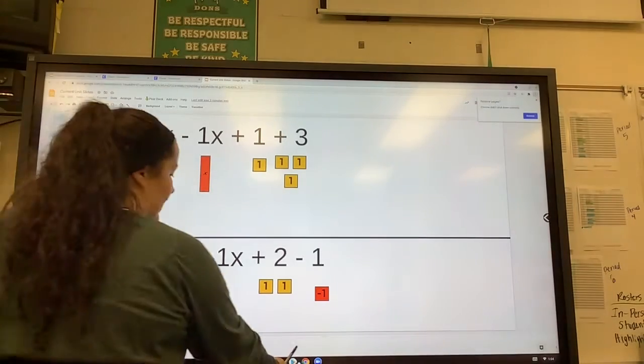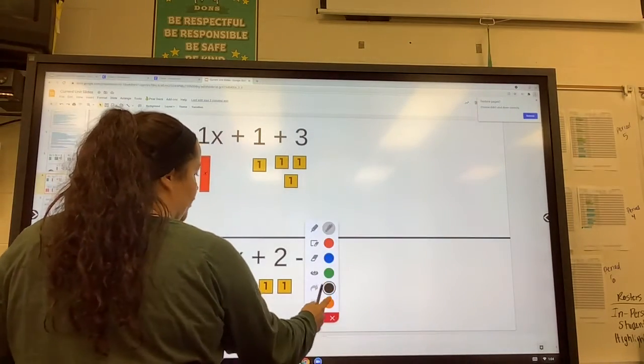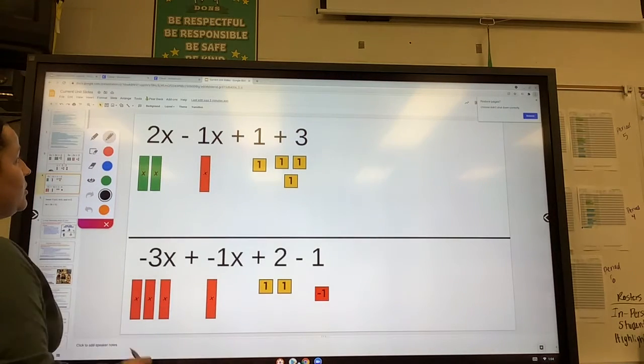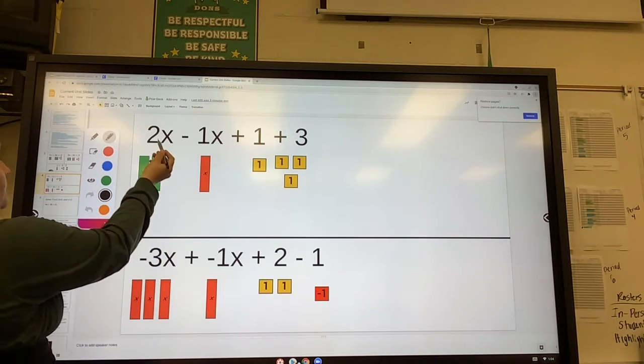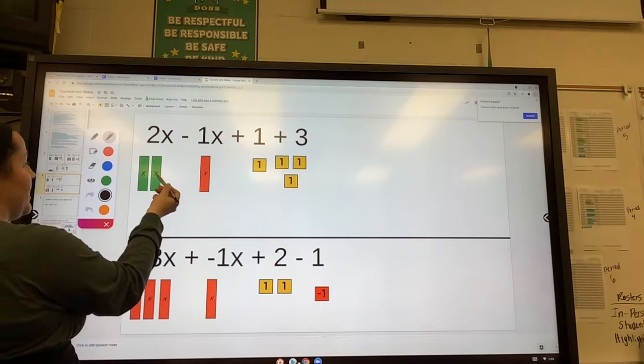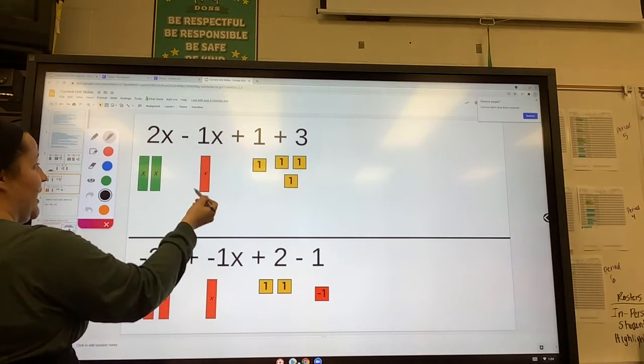In this example, we are going to practice simplifying algebraic expressions using algebra tiles. So in this case, we have the positive x's are the green boxes and the negative x's are the red.